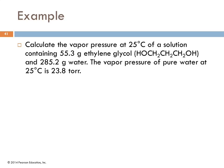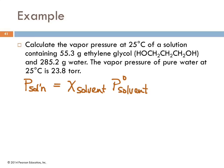Example: calculate the vapor pressure at 25°C of a solution containing 55.3 grams of ethylene glycol and 285.2 grams of water. The vapor pressure of pure water at 25°C is 23.8 torr. Using Raoult's Law, the vapor pressure of the solution equals the mole fraction of the solvent times 23.8 torr. We need to find the mole fraction.